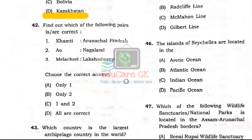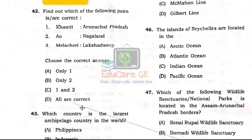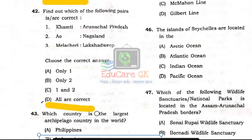Question Number 42: Find out which of the following pairs is/are correct. Khamthi zone is associated with Arunachal Pradesh; Naga Land is also correct; and Melaseri with Dipor — Khamthi is correct. Option D: All are correct.